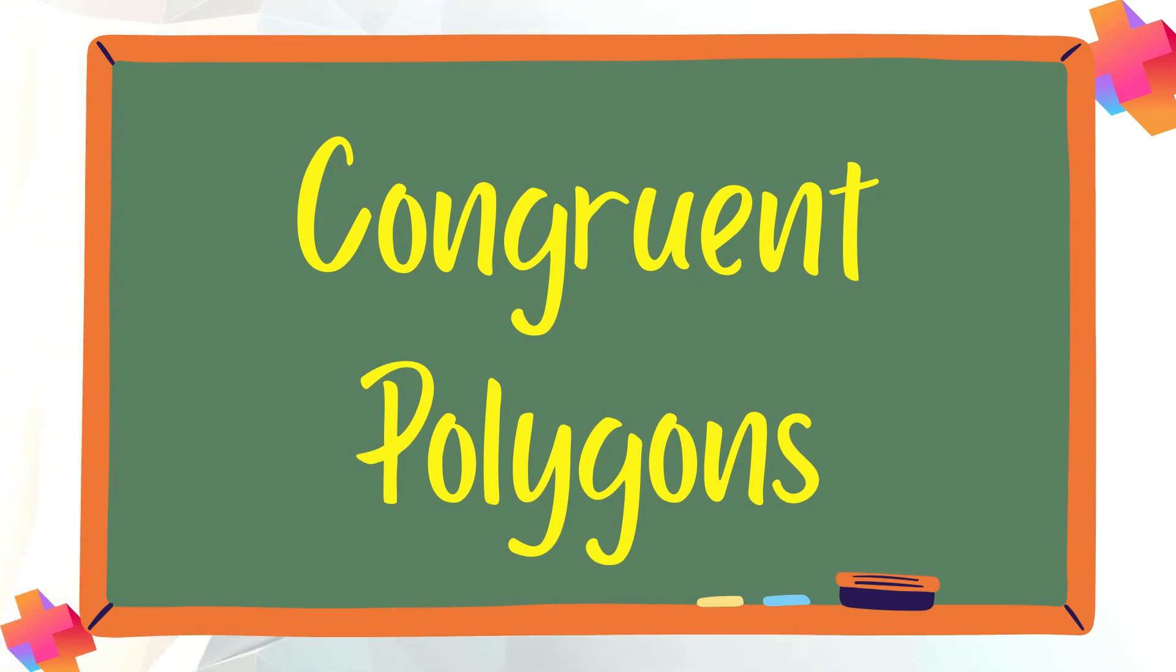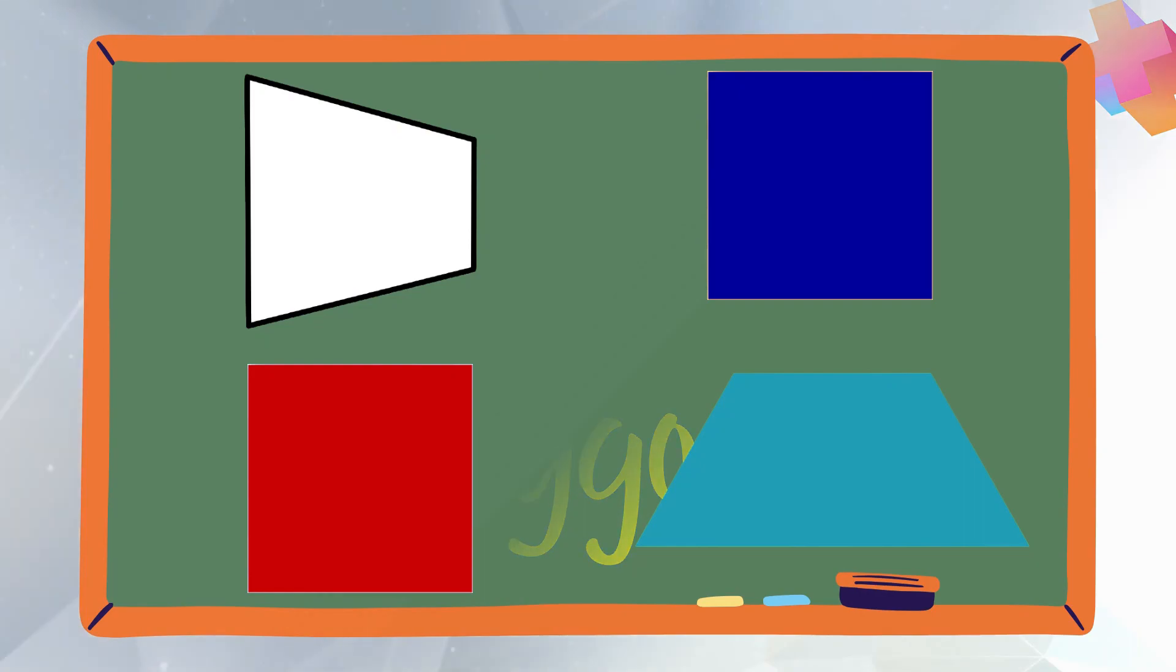Now, let us talk about congruent polygons. Can you figure out which of the following polygons show equal sides and equal angles?